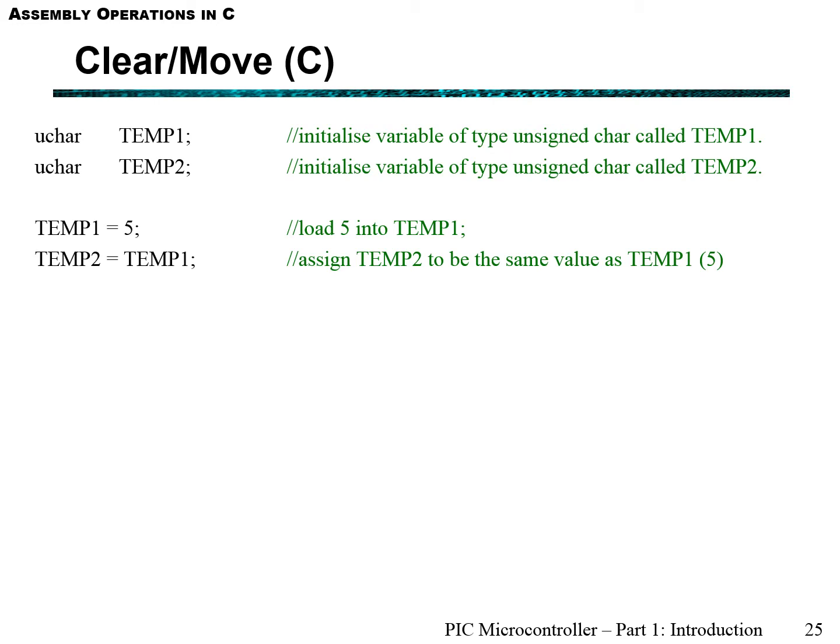Let's say we want to do a clear or a move, trying to either clear a specific variable or move one variable to the next. Let's initialize two variables called temp1 and temp2 of type unsigned char. Unsigned char are unsigned 8-bit values. Let's load the value 5 into one of the variables. So temp1 equals 5, and let's assign temp2 to be the same as temp1. In C notation, this is how you do it, and hopefully you can follow through this as you've watched the Lynda videos.